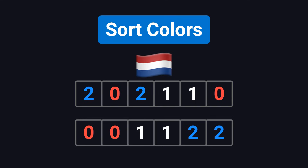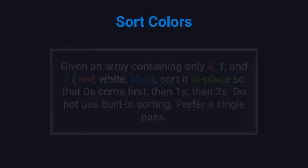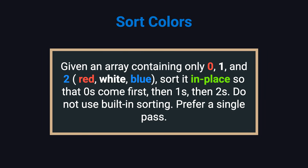Hi everyone. Today we're going to look at a classic coding interview problem called Sort Colors, also known as LeetCode 75. The problem is simple: you're given an array that contains only three numbers — 0, 1, and 2 — representing red, white, and blue. Your task is to sort the array in place so that all the 0s come first, then all the 1s, and finally all the 2s. There are two important constraints: you're not allowed to use built-in sorting functions, and ideally you should solve it in just one pass through the array.